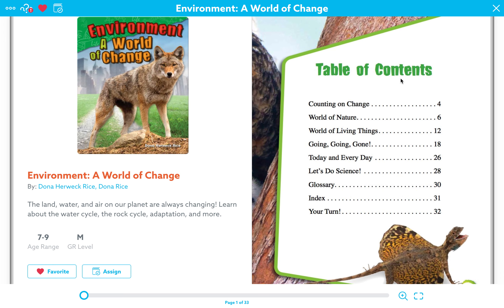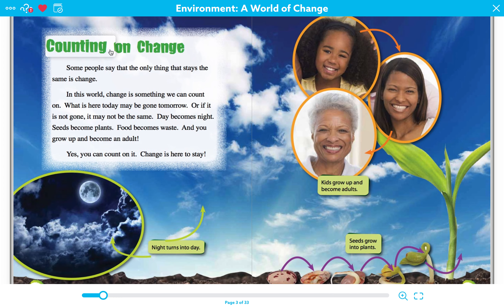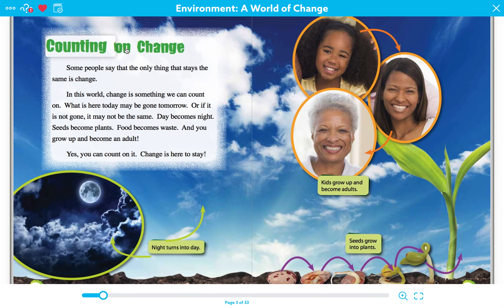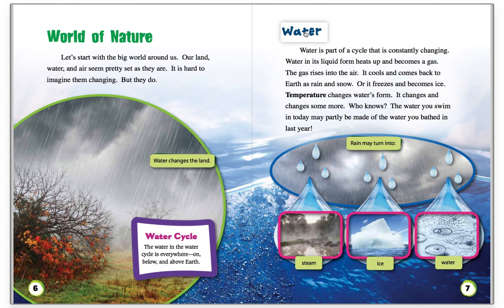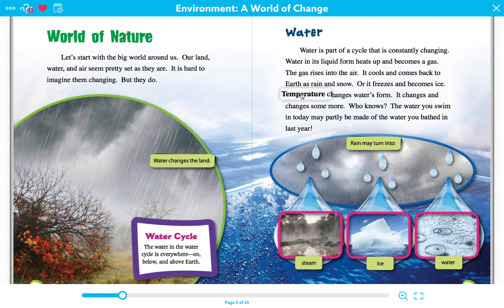In this non-fiction text, it's special because not only do they have headings for each section of the book, but each heading is the same font. Notice that this heading, Counting on Change, is the same font, size, and color as this heading, World of Nature. But some of the headings are a different font — these ones happen to be subheadings, but you can make your headings look any way you want. They could be the same on every page or different on every page. I also see bold text, which is telling me that this is an important word to pay attention to.